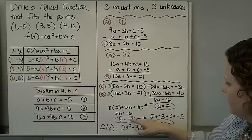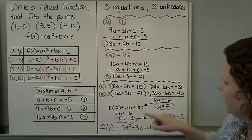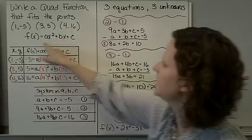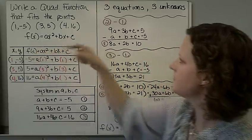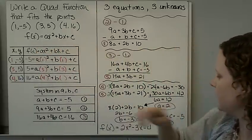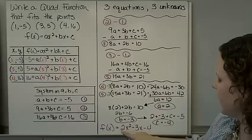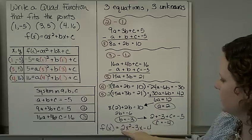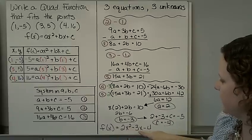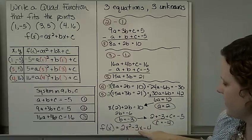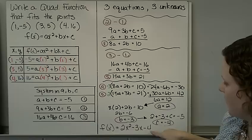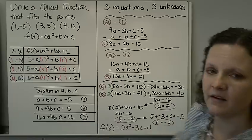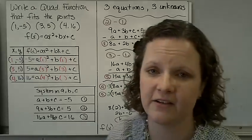So we have A, B, and C. We put that back into our standard form and get 2x² minus 3x minus 4. And that's our answer.